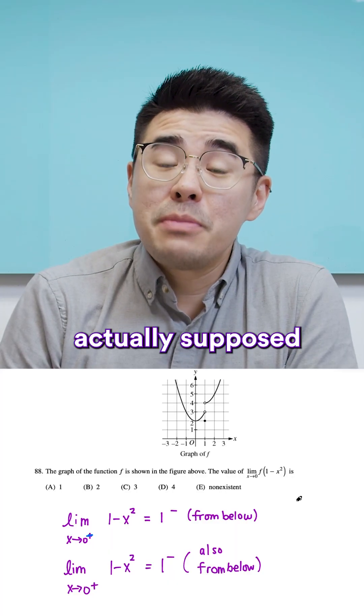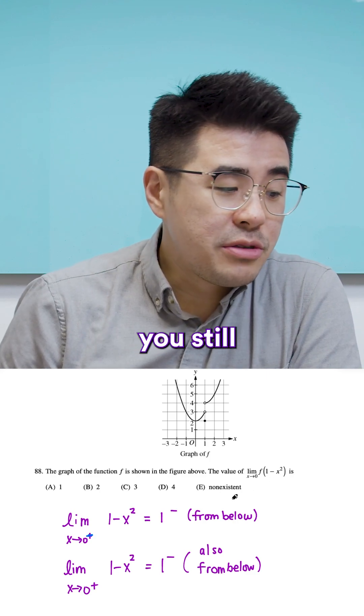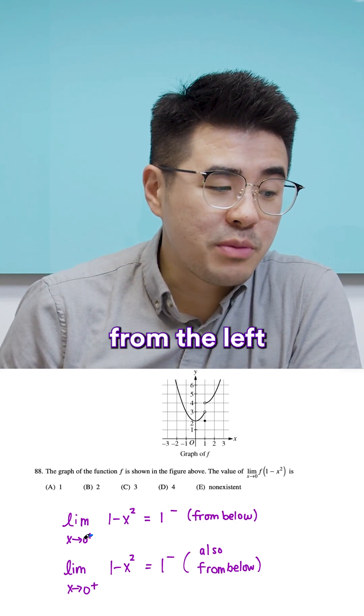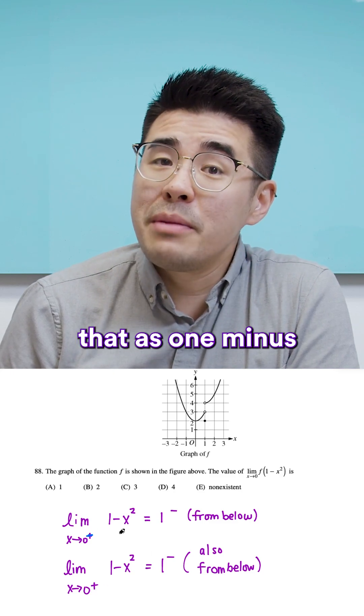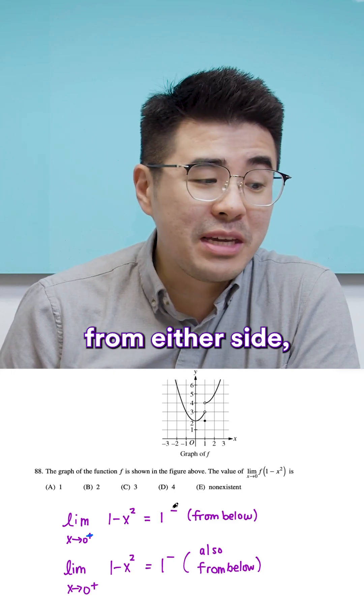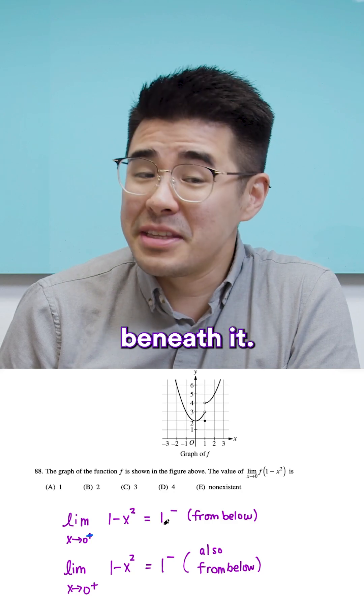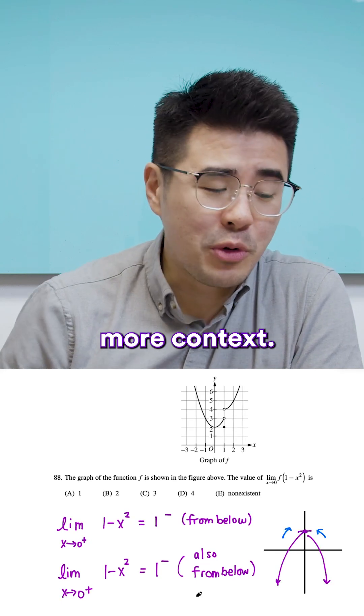So here's how you're actually supposed to do the question. When you're looking at the limit from the inside, you still want to do your one-sided limits approach from the left and approach from the right. And you have to realize that as 1 minus x squared approaches 0 from either side, you're approaching 1 from beneath it.